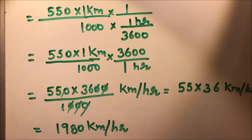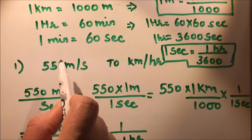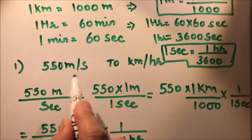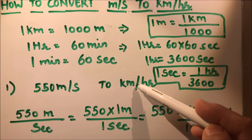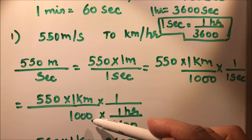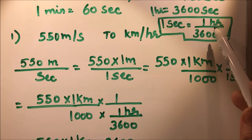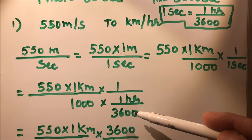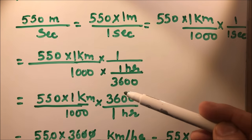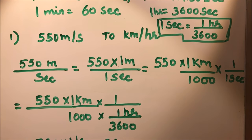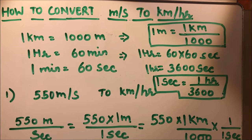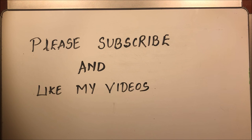So this is how we convert meters per second to kilometer per hour. We should know the basic relations, then write meters in terms of kilometers — which is one over thousand — and seconds in terms of hours — which is one over 3600. In this way we solve it and get the answer. Thanks for watching. Please subscribe to my channel and like my videos.